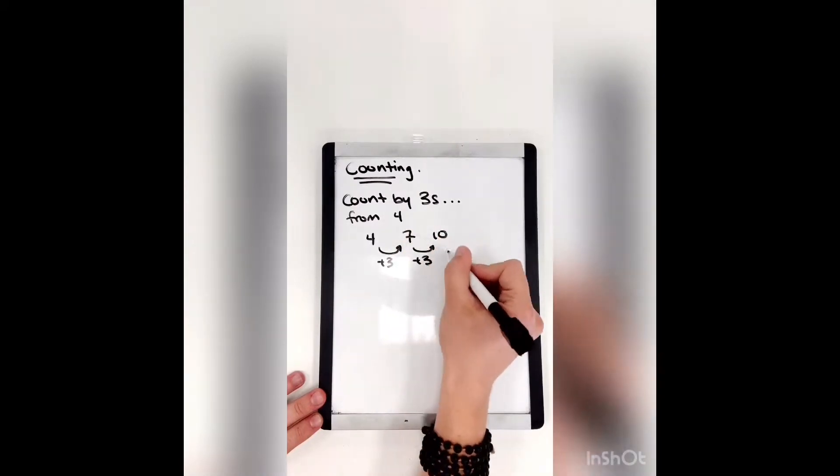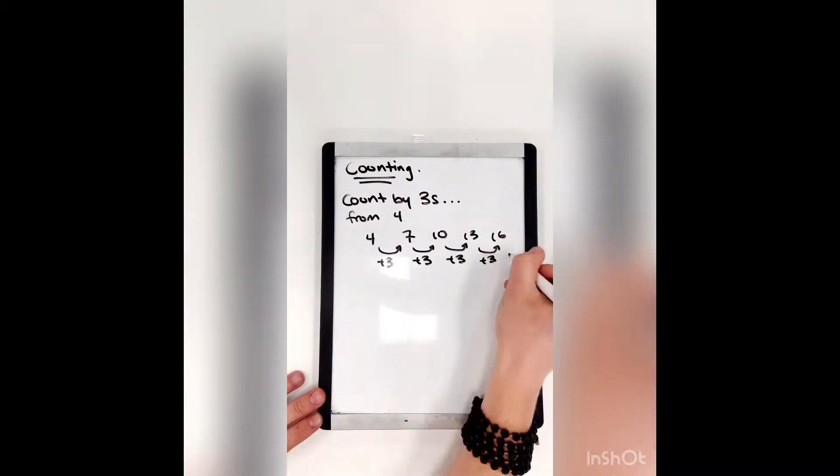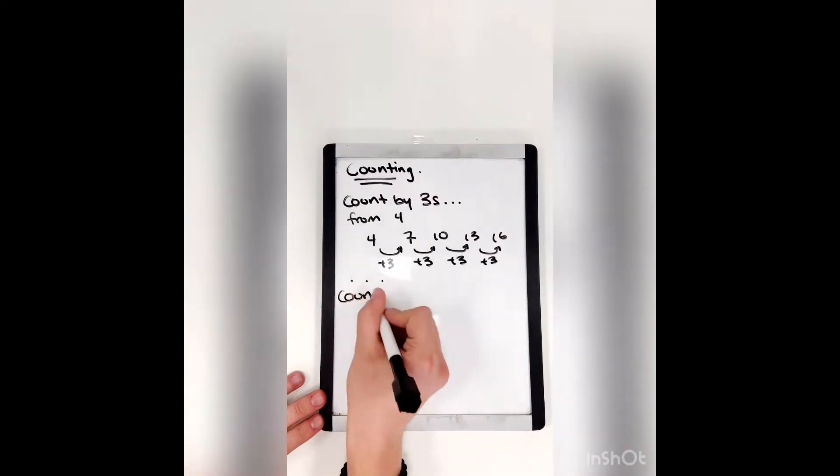Four plus three is seven. Seven plus three is ten. Plus three is thirteen. Plus three is sixteen. We can go on and on forever.